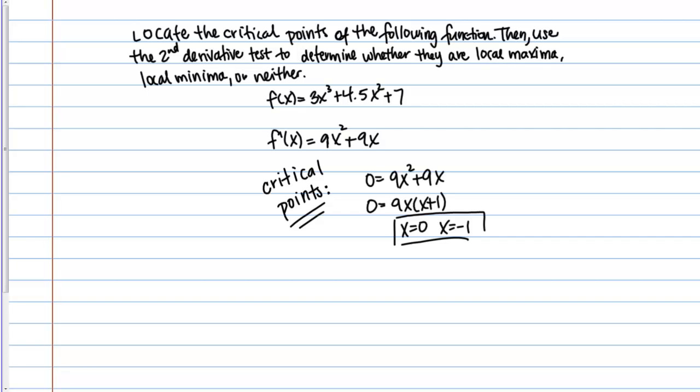We've located the critical points, but now we want to use the second derivative to determine whether these are local maxima, minima, or neither. The second derivative test works by evaluating the second derivative at the critical point in question. If the second derivative is positive at that point, the critical point is a local minimum. If it's negative, the critical point is a local maximum. And if the second derivative is 0 at that point, the test is inconclusive.